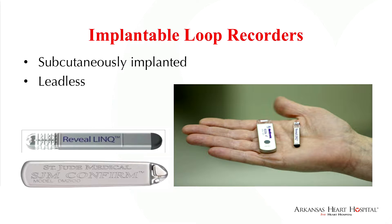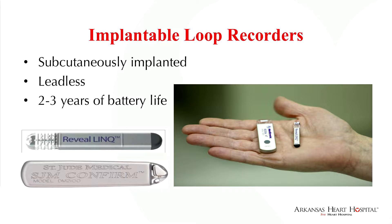Implantable loop recorders have been around for some time. The latest generation is a very, very small device — there's one from Medtronic and one from St. Jude. These devices are subcutaneously implanted, giving you a single lead EKG via two electrodes. They're leadless and provide anywhere from two to three years' worth of information, because that's how long they last. They're fairly easy to explant, taking about five minutes.